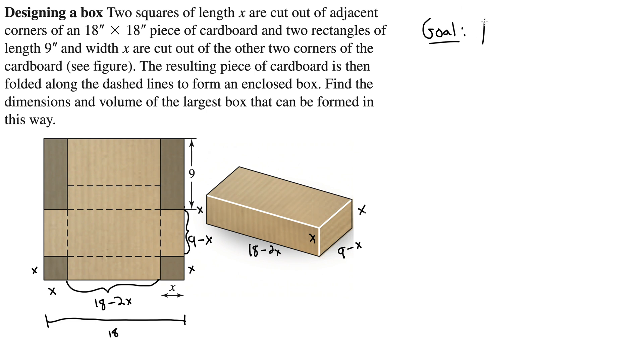Maximize the volume. So then we need our objective function, which gives us an equation for volume. Well, remember volume for a cuboid like this is base times width times height. So what do we have? We have 18 minus 2X. So we'll call that the base. Times width, we'll call that 9 minus X. And then the height in this case is X.